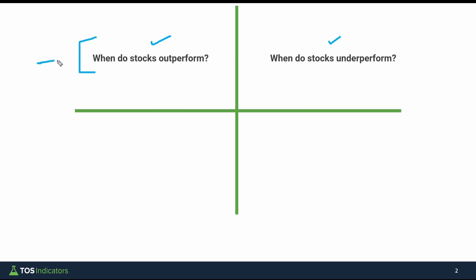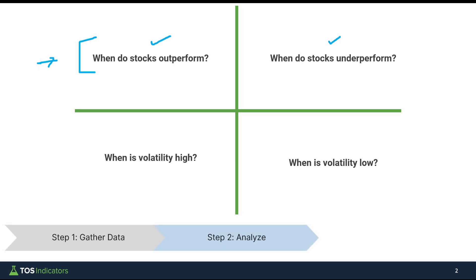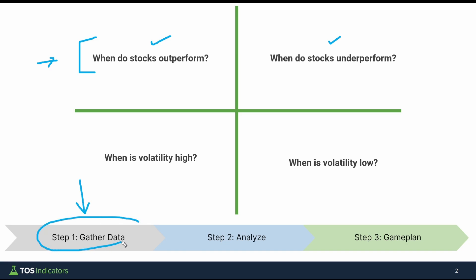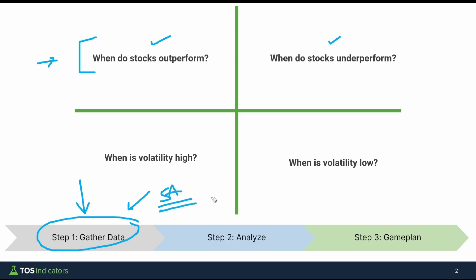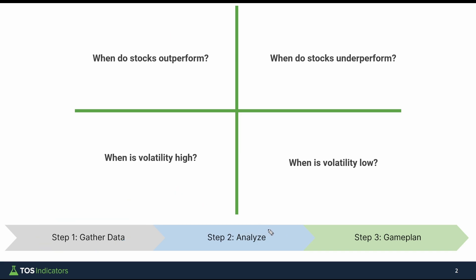This covers our price activity, but we're still missing a key component, and that's volatility. We'll also bring in volatility here, taking a look at which months tend to have higher volatility versus lower volatility. The way we're going to go through this exercise is quite simple. I'll start by gathering the data using our seasonal analysis indicator, which is linked in the description box for free.